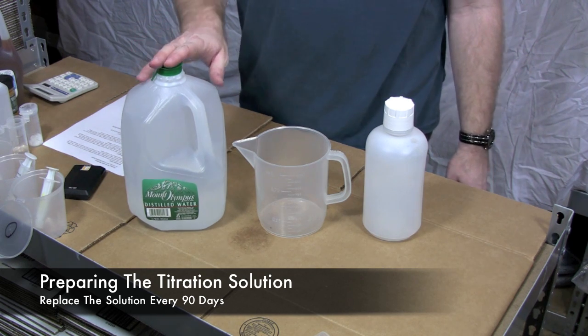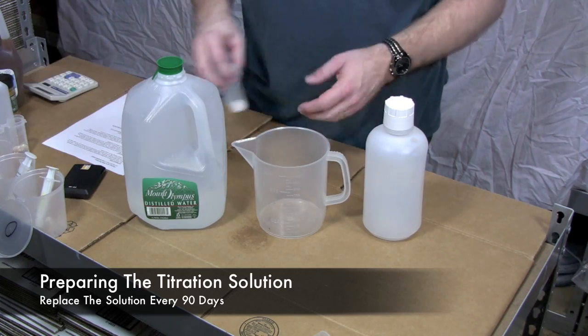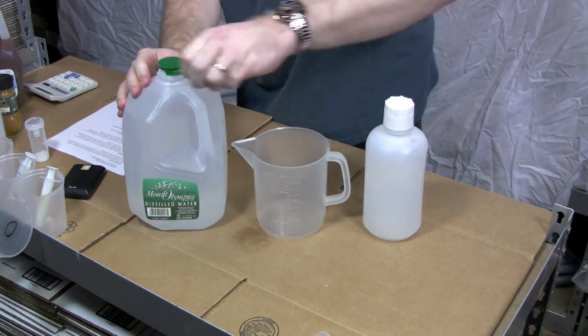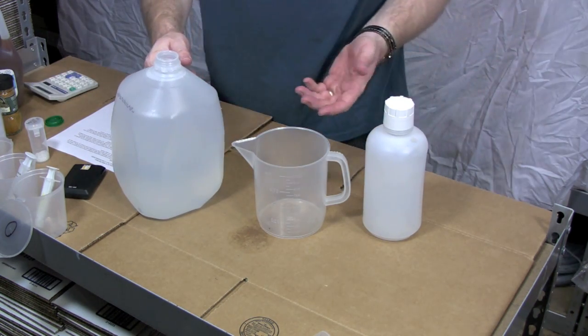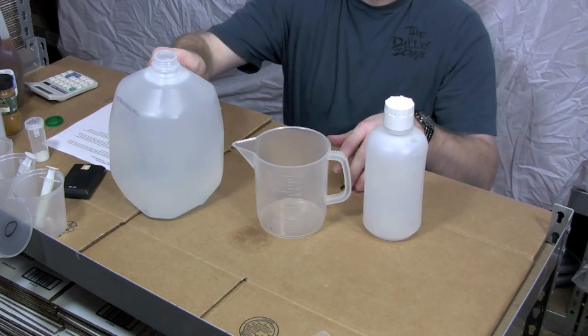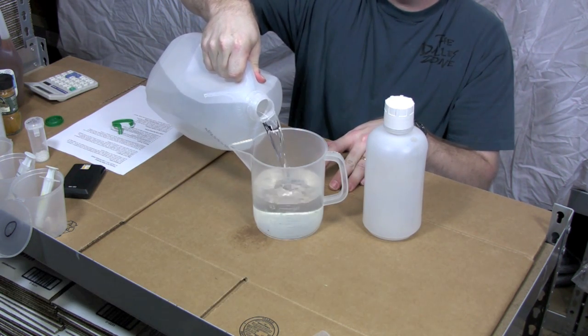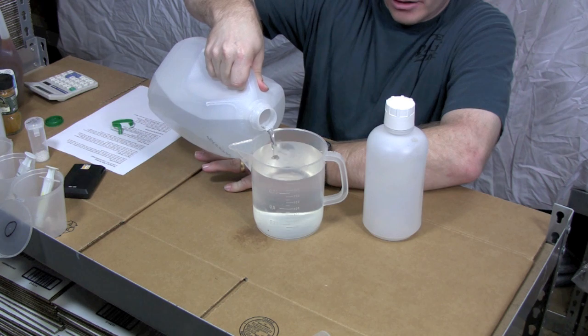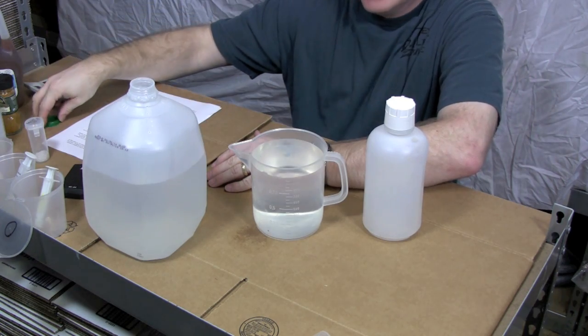The next step we're going to do is prepare a titration solution. To do that we need to measure out a liter of water. I have a very accurate measuring cup. You can purchase these on Utah Biodiesel Supply or you can go into most grocery stores and find anything that just has a liter marking on the side. But it's important that you fill it right to the liter mark. This is distilled water and it's important that you use distilled. If you use other water the water can be acidic or basic. This distilled water is perfectly neutral because what we're trying to measure in the oil has to do with measuring pH.